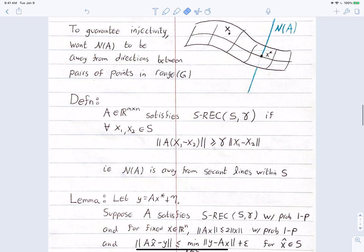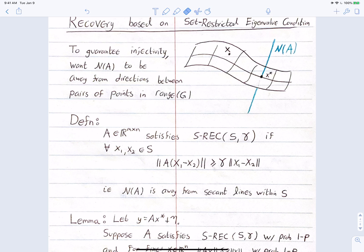We codify this into the set restricted eigenvalue condition (S-REC). For a matrix A in R^(m×n), this condition with set S and parameter γ ≥ 0 holds if for all pairs x1, x2 in S: ||A(x1 - x2)||_2 ≥ γ · ||x1 - x2||_2. Think of this as a stable version of the claim that the null space of A is away from the secant lines within the set S. We will later take S to be the range of the generative model.